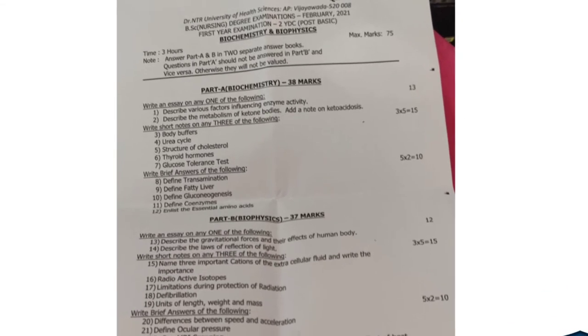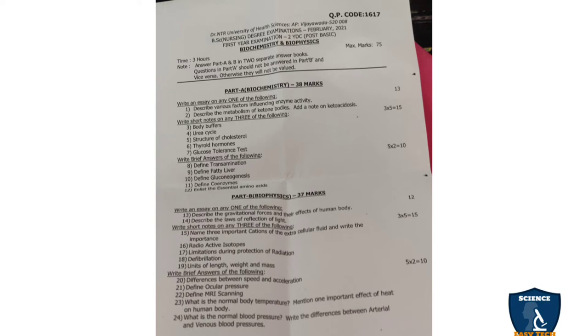The question paper code is 1617 — this is the biochemistry and biophysics question paper for first year post basic BSc nursing students, 2YDC program. This question paper is for 3 hours and the maximum marks is 75. Part A is biochemistry for 38 marks, and part B is biophysics for 37 marks, totalling 75 marks. You have to write Part A and Part B in separate booklets.